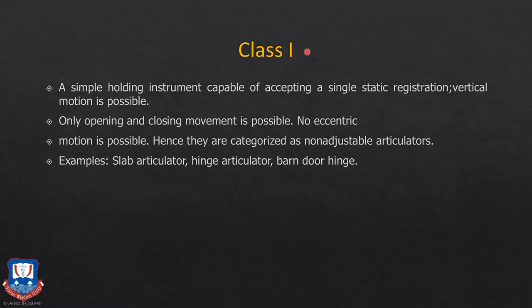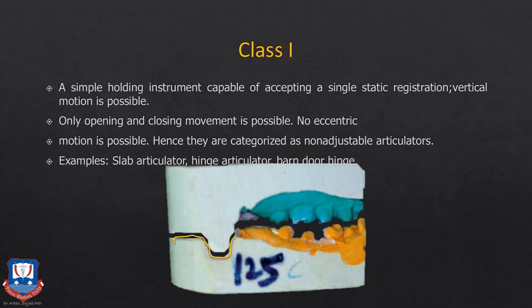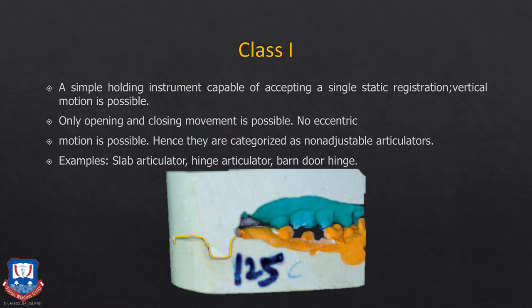Class one articulators are basically simple holding instruments capable of accepting only a static registration. The upper and lower members move only vertically — there is no rotatory or hinge movement and no eccentric movements. These articulators do not accept face-bow transfers and cannot simulate the patient's hinge axis. They are used by dental technicians and laboratories. One example is a slab articulator, where the base of the upper and lower models are made with plaster extended to make a key and keyway, so they just move vertically — like a jigsaw puzzle in a vertical direction only.